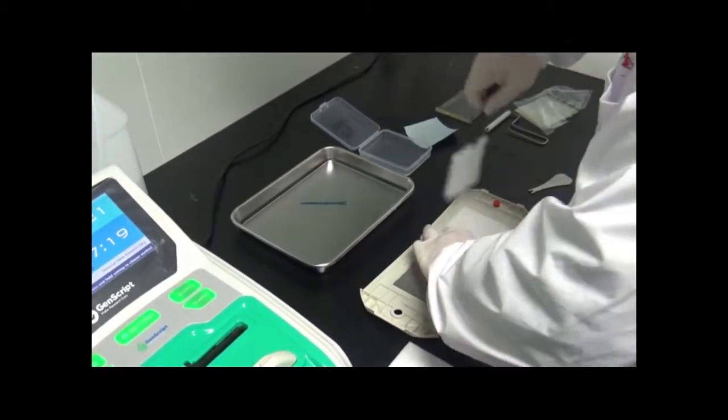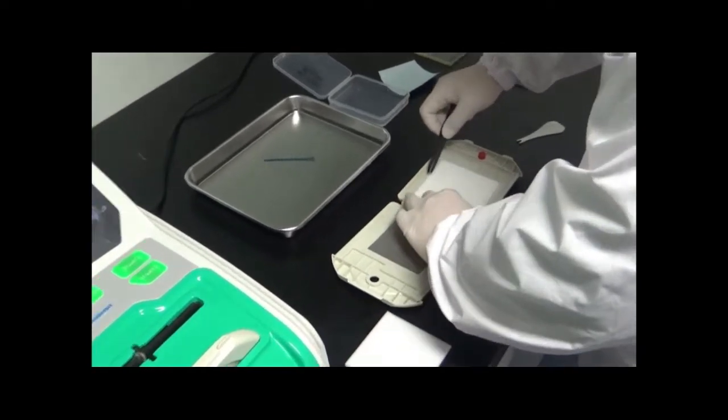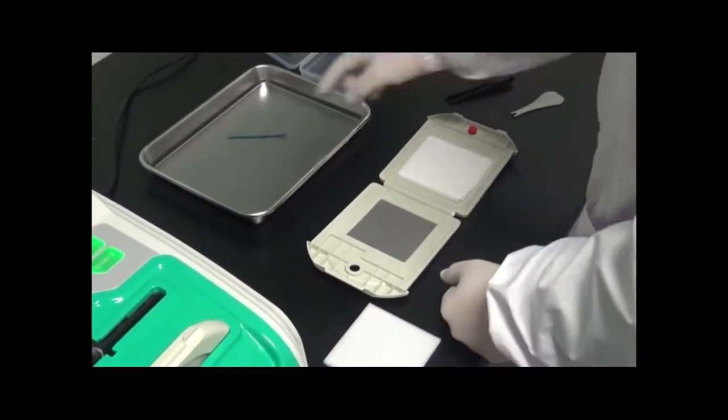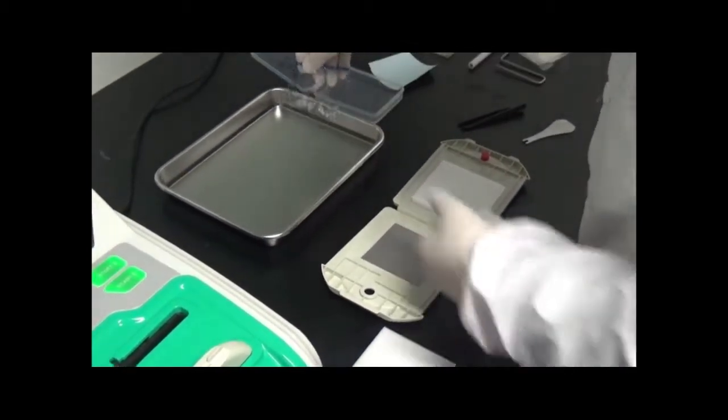Gently pick up the membrane with forceps and place it on top of the dry sponge. Now pick up the gel from the water tray and place it on top of the membrane.